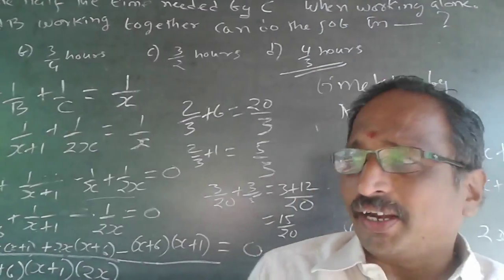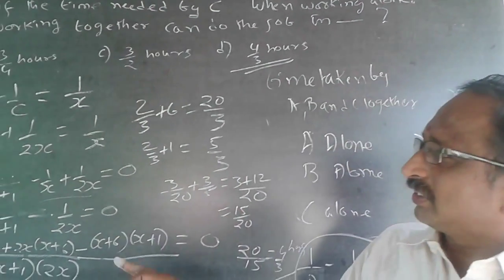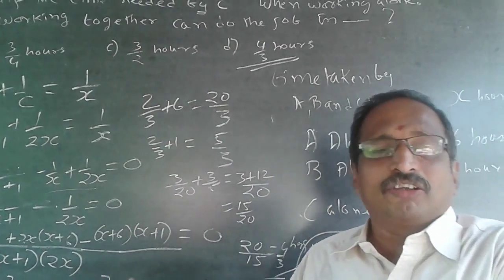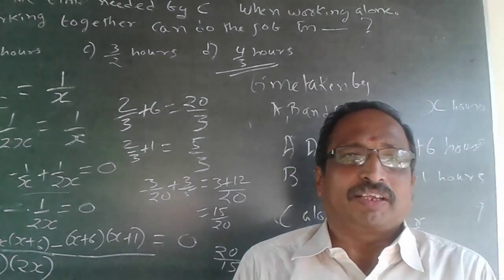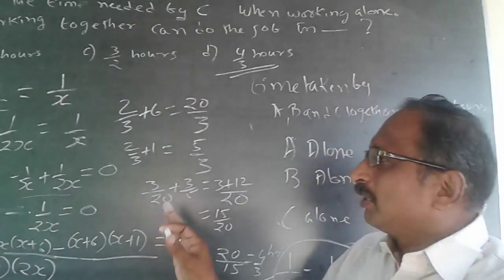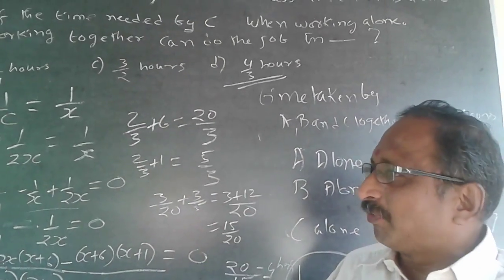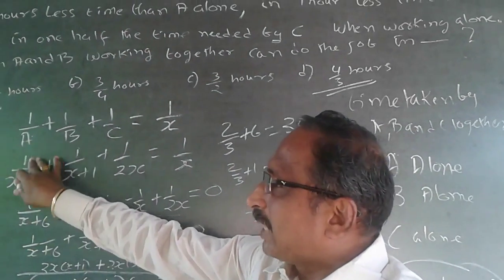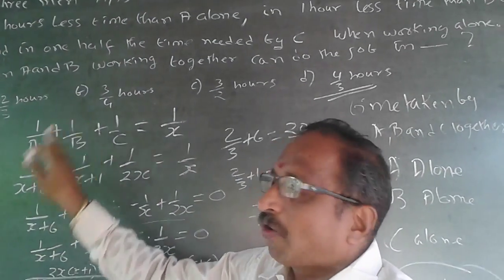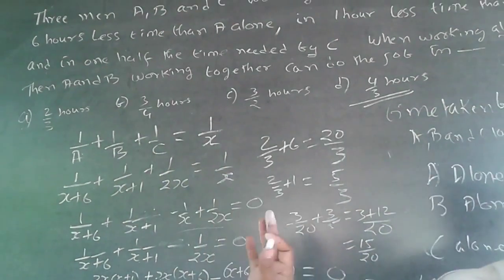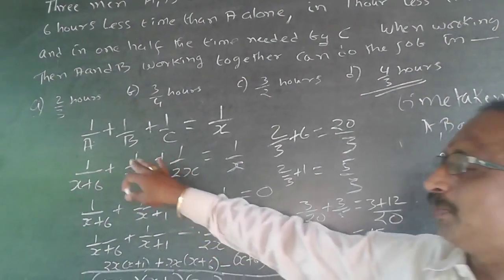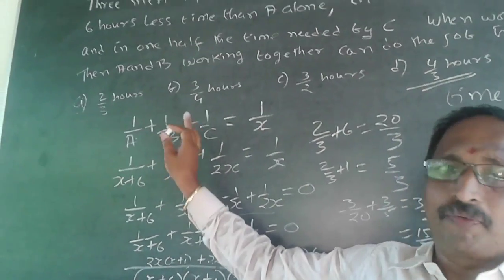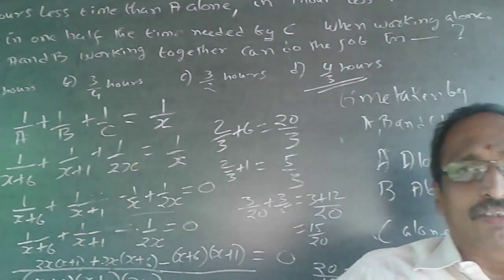This is one way of doing it. You can also convert everything in terms of A, B, or C — all approaches are valid. But be very careful: A minus B equals 5, and 1/A minus 1/B does not equal 5. Always be careful not to confuse time taken with work done per hour.